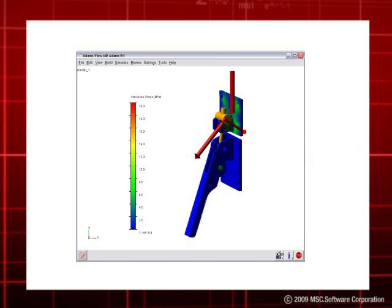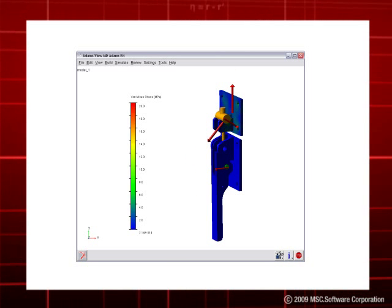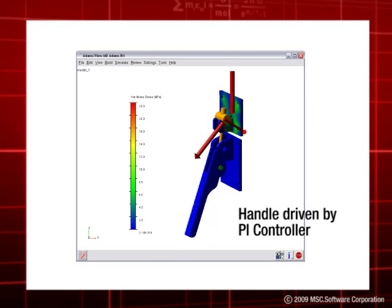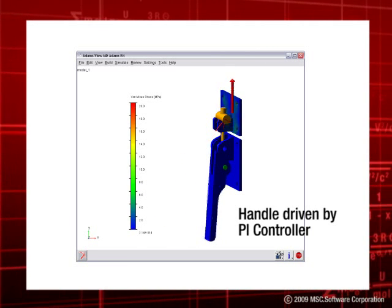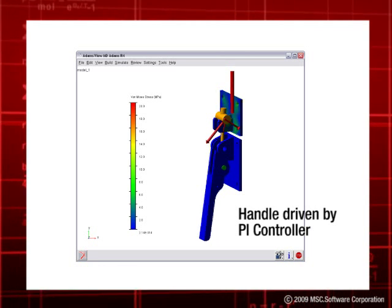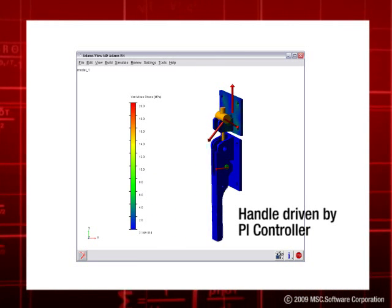These improve fidelity and are able to recover deformation and stresses dynamically from the bodies. The handle is driven by a force that uses a PI controller. This applies enough force to attain a constant angular velocity about the latch pivot. This allows us to capture bending and twisting loads in the handle versus driving the joint with a torque or rotational motion.